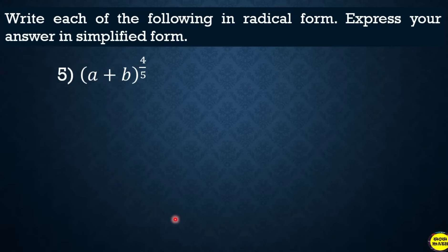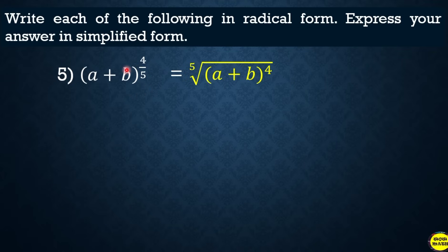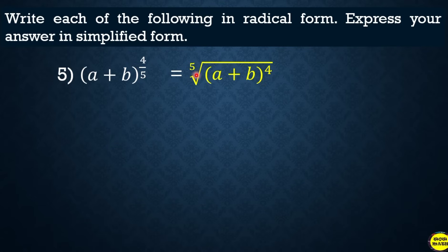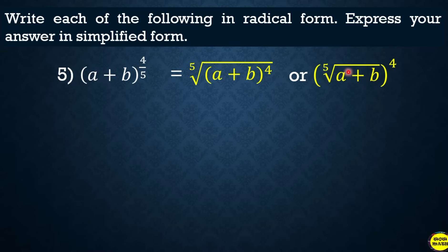Another example: the quantity of a plus b, raised to 4 over 5. Since a and b are grouped together, they must be enclosed in parentheses in radical form as well — otherwise only b would receive the exponent. The index is 5 and the numerator is 4, so this becomes the fifth root of the quantity (a plus b) raised to 4. Either form is correct.